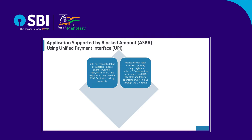To start with the process, you need a UPI ID. If you have an existing UPI ID, you can simply apply for the IPO of your choice through your broker's website or mobile application. But if you do not have a UPI ID, you will have to create one. In this video, you will understand how retail individual investors can apply for an IPO equity using their UPI ID for the purpose of blocking funds.